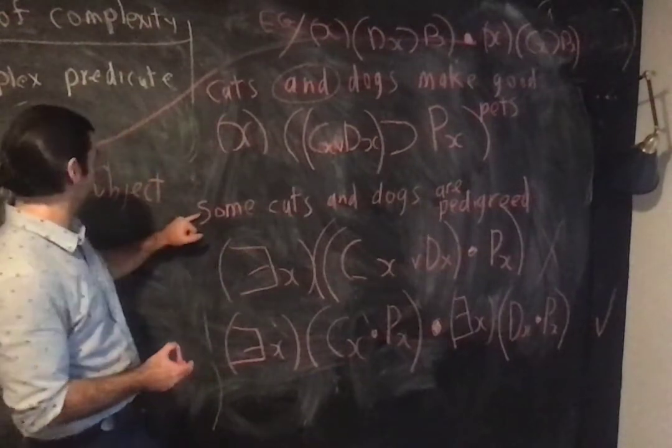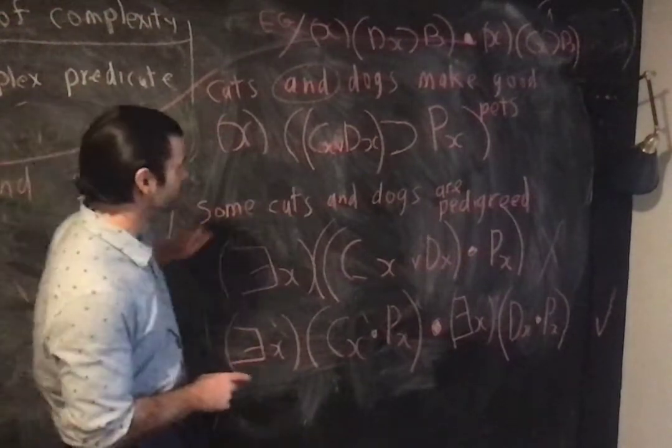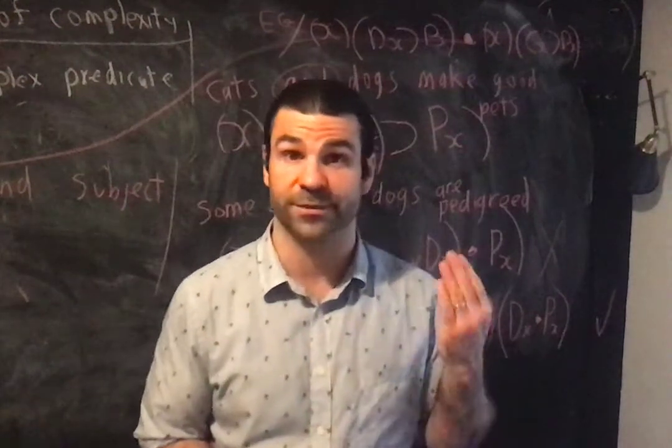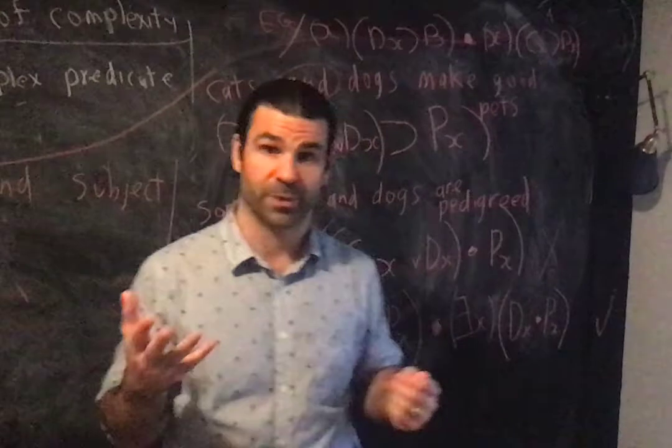But this sentence says something stronger. Some cats and dogs are pedigreed. I'm saying what? I'm saying that there are pedigreed cats and there are pedigreed dogs.